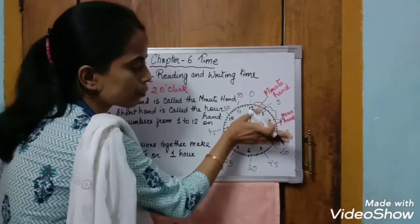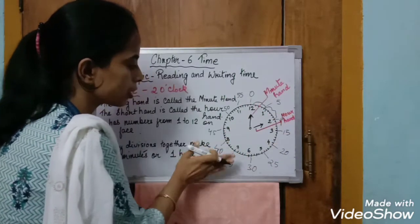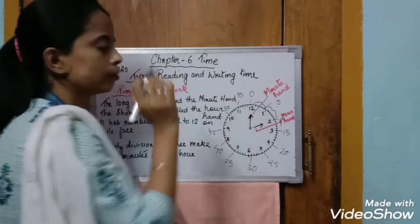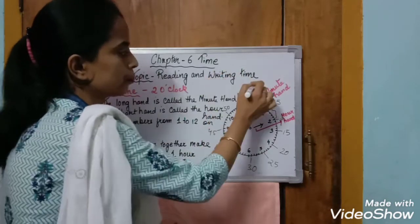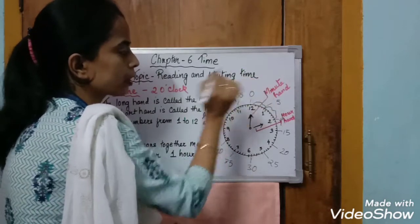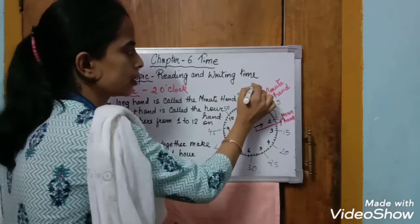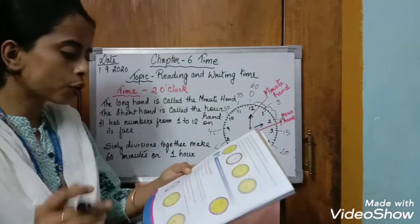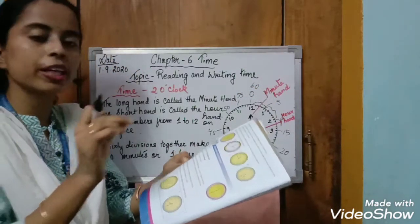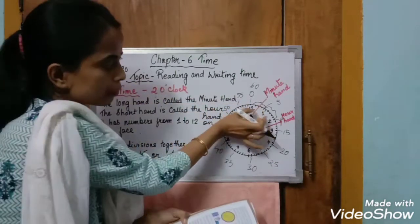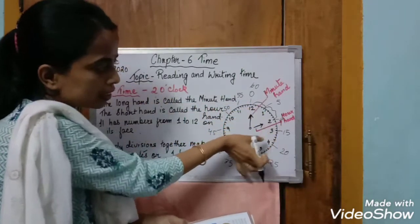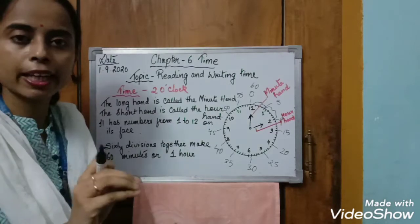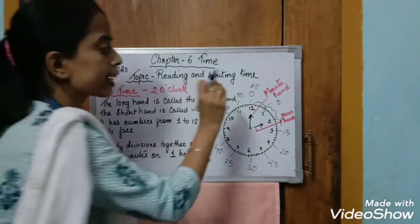Counting by fives: 5, 10, 15, 20, 25, 30, 35, 40, 45, 50, 55, 60. Here we have 60. Each division between these consecutive numbers indicates one minute. So each small division on the clock indicates a minute.